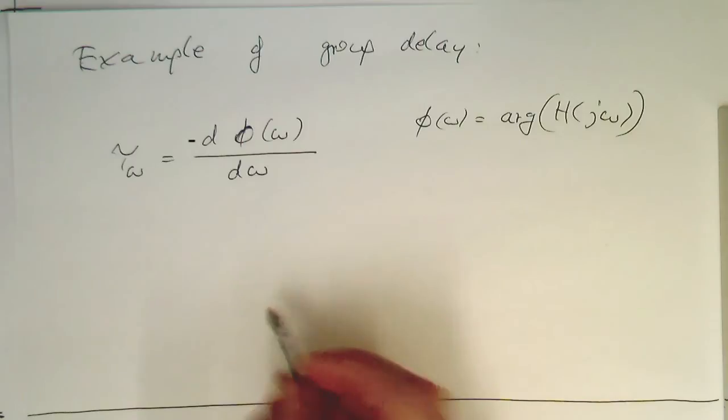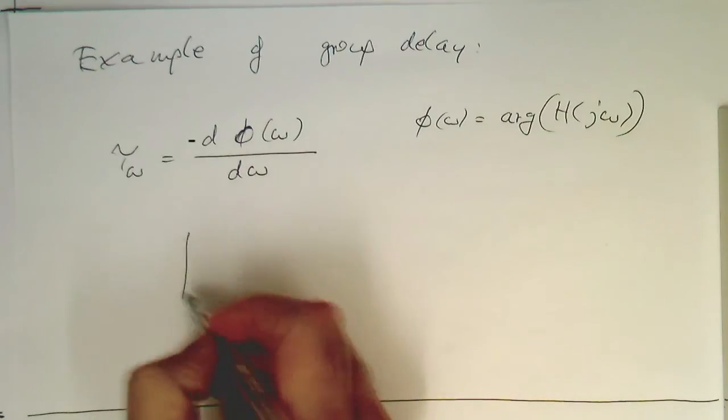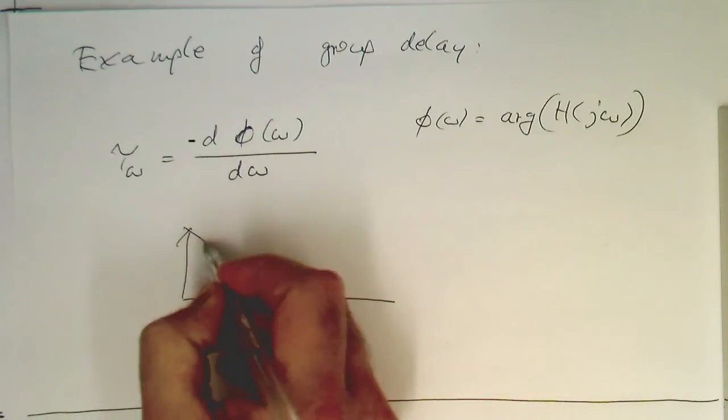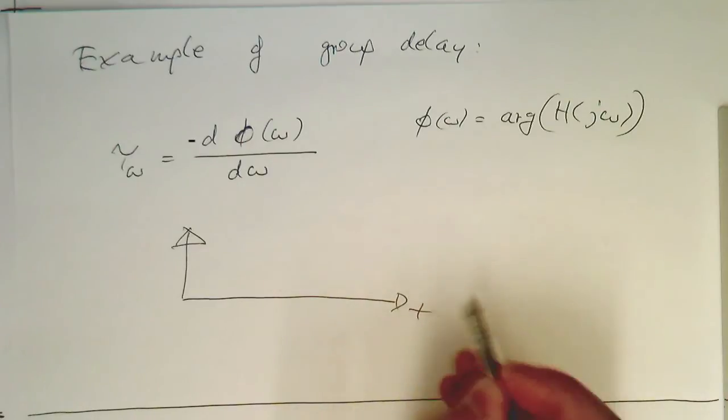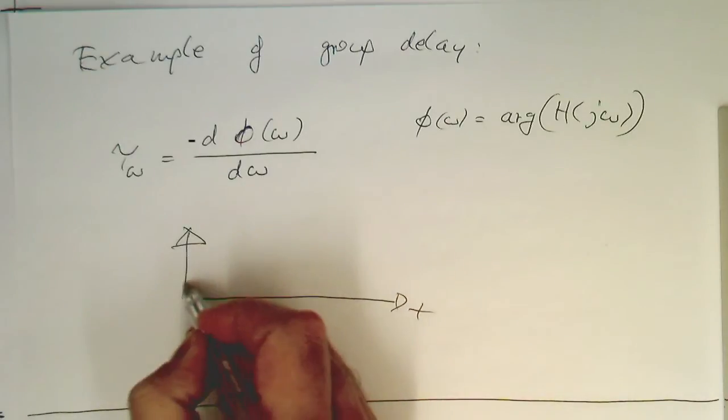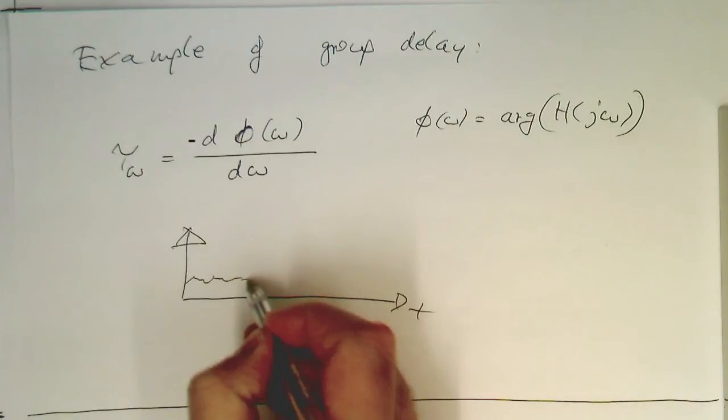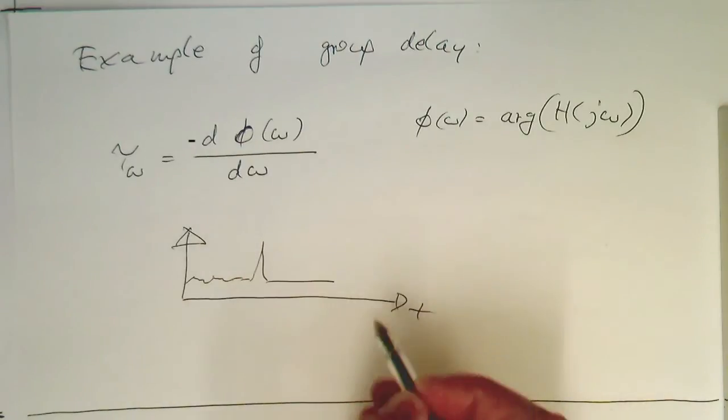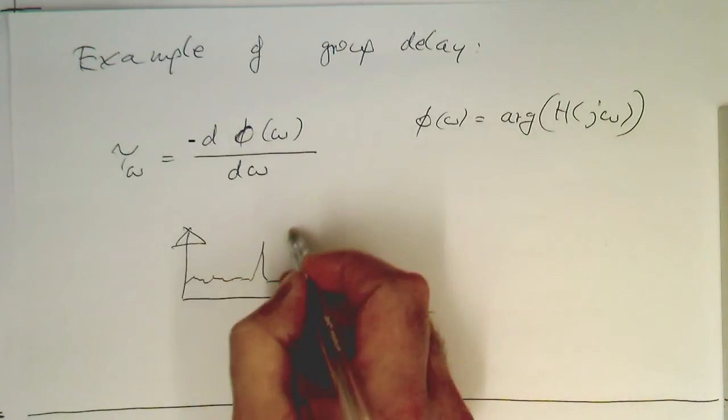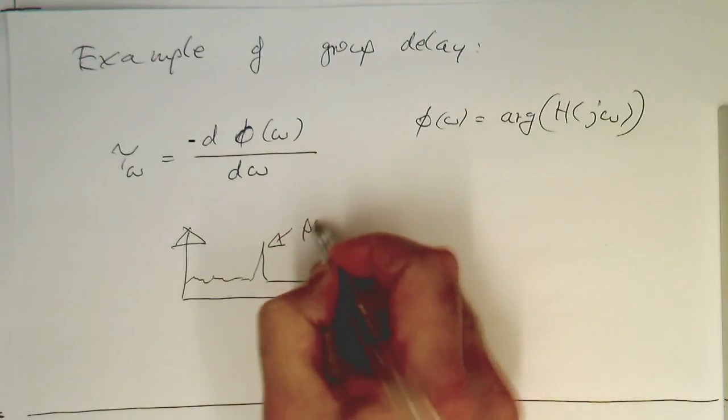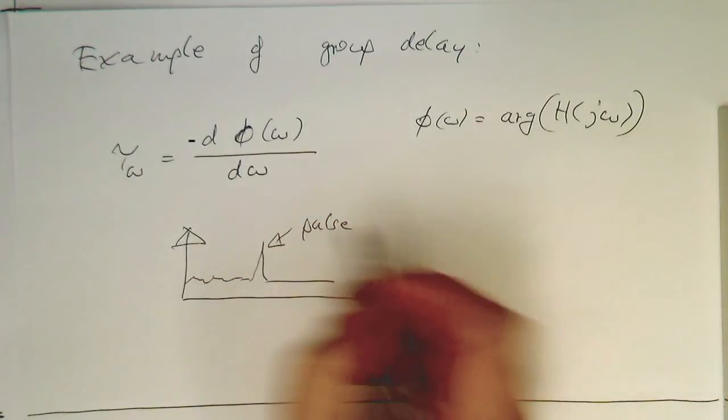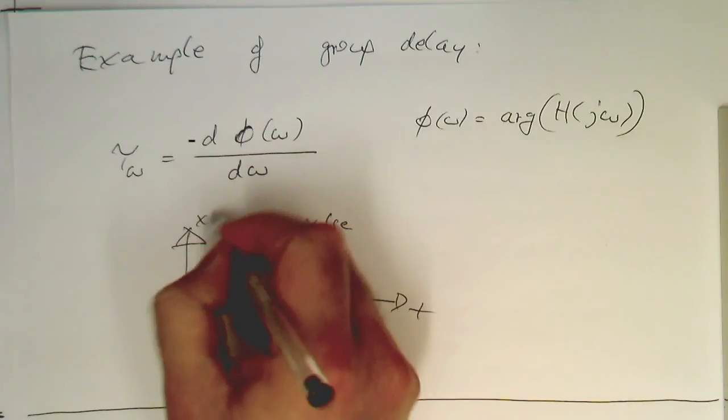Now imagine we have a piece of music. This is your time. There's music here, and then suddenly there's a drum kit hit, like a pulse, like a short pulse here. That's our time signal, x of t.